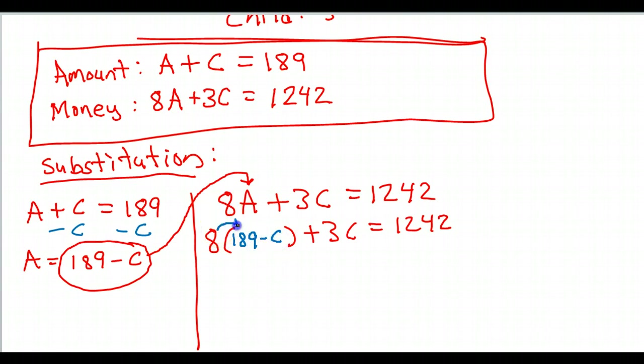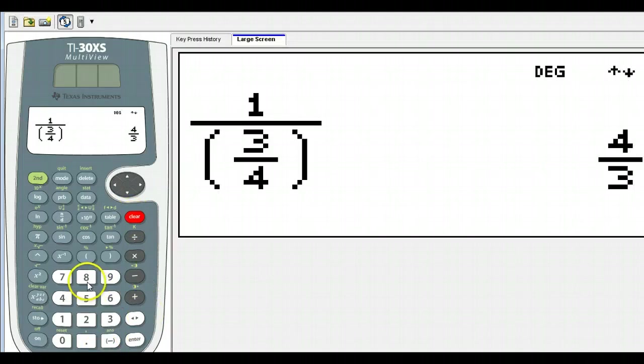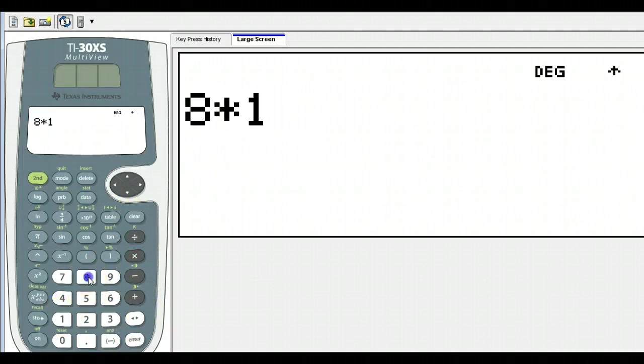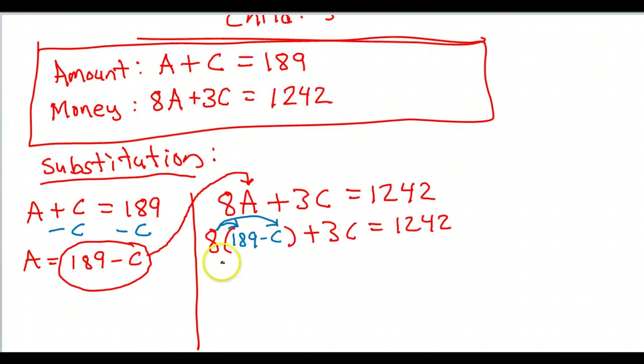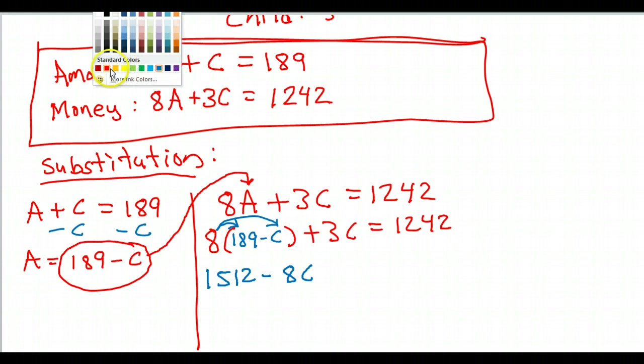Of course, now I need to do the distributive property like this. Let's see. 8 times 189, I don't know that off the top of my head. That's 1,512. So I've got 1,512 minus 8C, and then the rest of it.